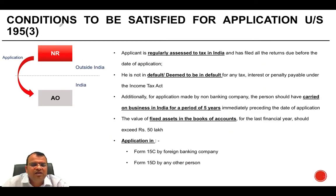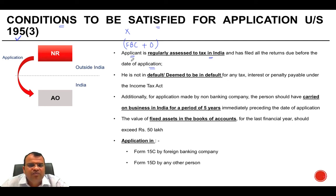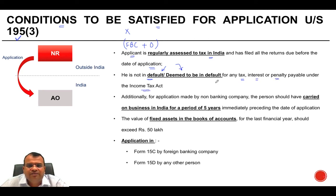Before such an application can be made, certain conditions must be satisfied. If you satisfy these conditions, your application under Section 195(3) is valid and maintainable; if not, the application may not be tenable. The conditions are: first, the applicant must be regularly assessed to tax in India and must have filed all returns due before the date of application. Second, the applicant must not be in default — they should not be deemed a person in default for any tax, interest, or penalty payable under the Income Tax Act.